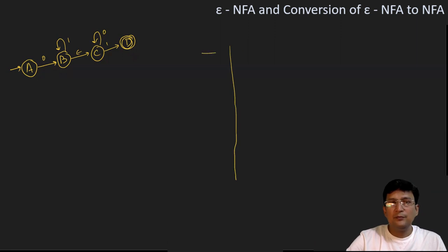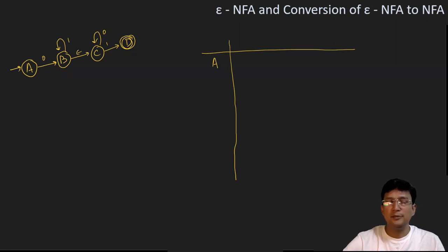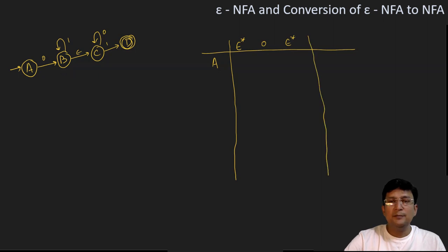we will have to show the transition of all the states from zero and one, which are the input symbols. Along with zero, we will take epsilon also as the input symbol. For showing the transition, we take the epsilon closure of a state, then the transition with zero, then the epsilon closure again. Similarly, we show the epsilon closure, then transition with one, and finally compute the epsilon closure.